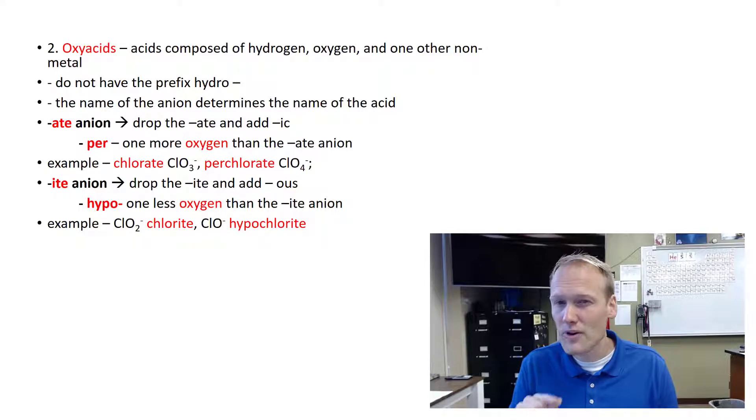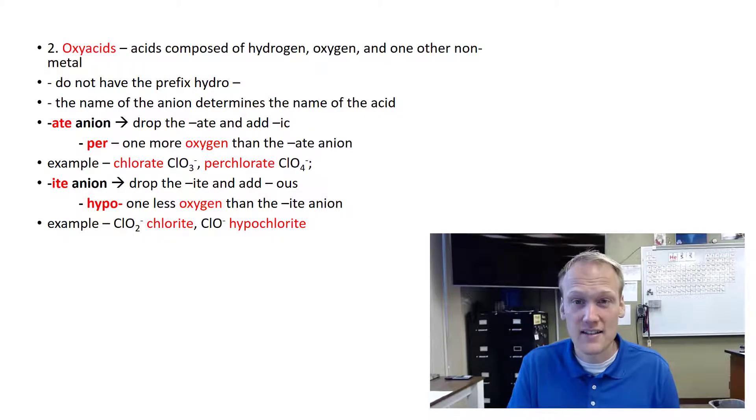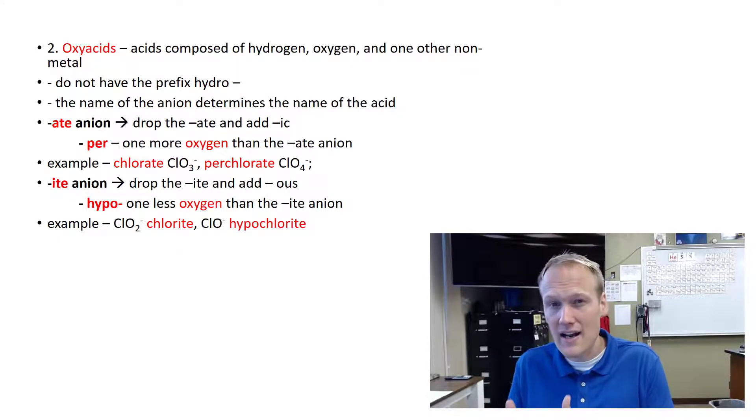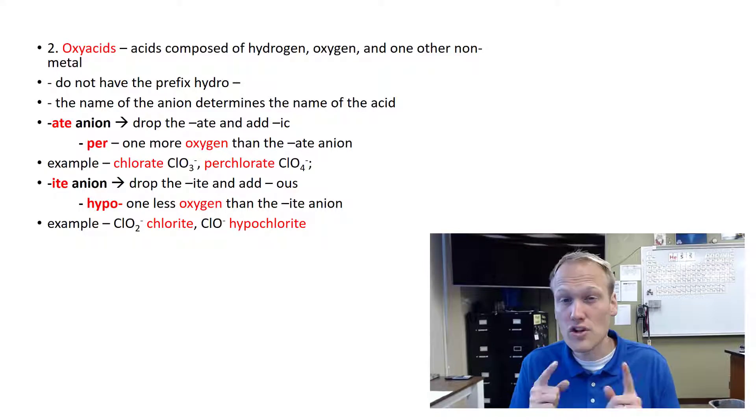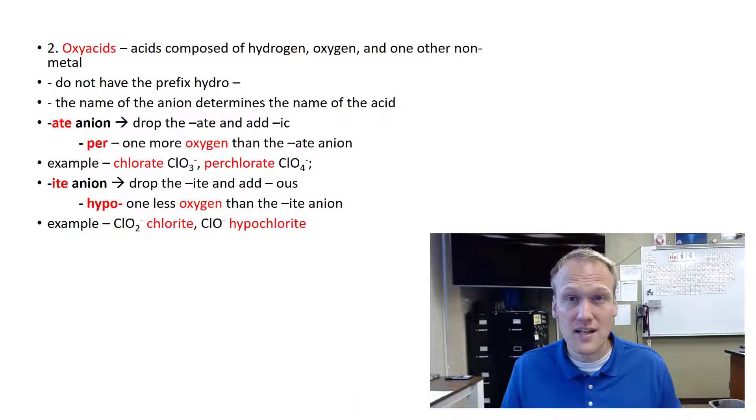The oxy acids get a little more complicated because we have so many different types of polyatomics that have oxygen in them. An oxy acid will be a hydrogen cation, it's still an acid, with a polyatomic anion that has oxygen in it. You know from naming ionic compounds that we have lots of different polyatomics with oxygen that can end in -ate, like nitrate, but they can also end in -ite, like nitrite. We can have pernitrate and we can also have hyponitrite. So let's talk about these variations and how we name them.